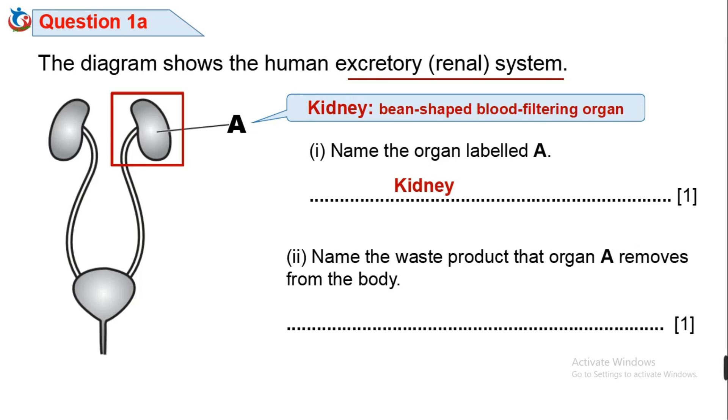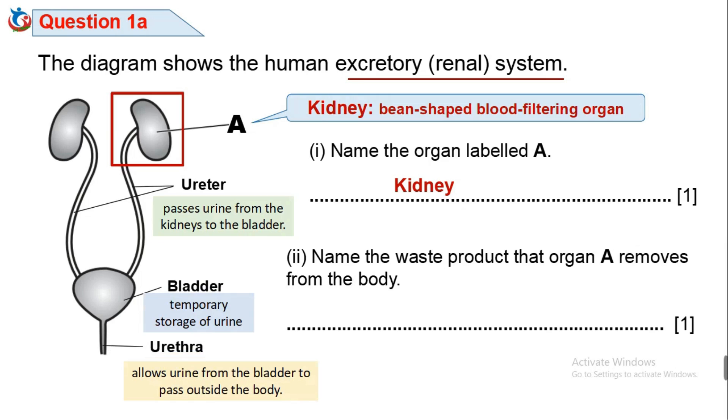To expand your understanding, let's consider the other parts of this excretory system. There is ureter, which passes urine from the kidneys to the bladder. There is bladder for temporary storage of urine. And urethra, which allows urine from the bladder to pass outside the body.